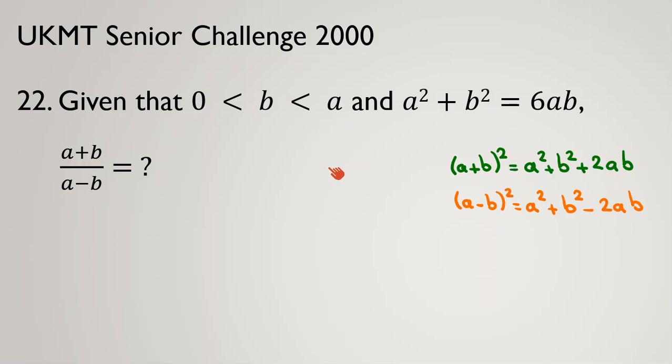So if we want to relate a+b to a² + b² and ab, we should use this identity. And if we want to use a-b, we should use (a-b)².